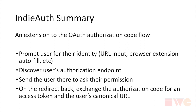Here's the summary workflow. If you're familiar with OAuth, it is the same mechanism — we've just added a few things. You start by prompting the user for their identity URL, traditionally done with a login box. From that, the application discovers the authorization URL and directs the user there — exactly the same as the OAuth flow — where the user sees the authorization prompt and can allow access. The authorization server then issues a temporary authorization code, same as OAuth, which the app can exchange for an access token and the canonical user URL.